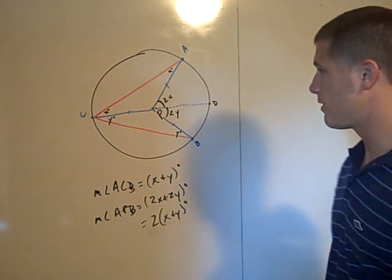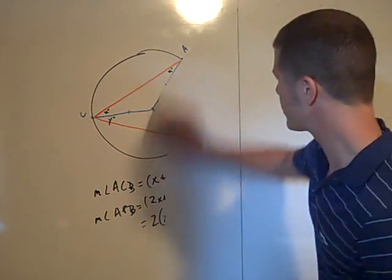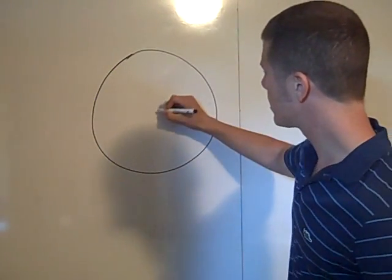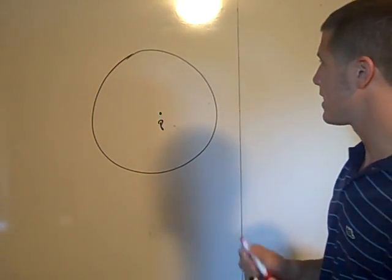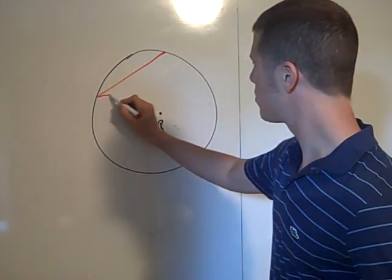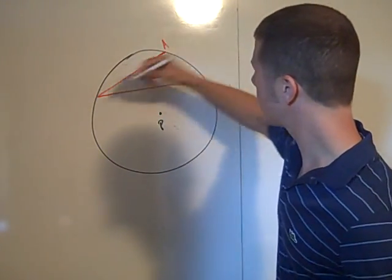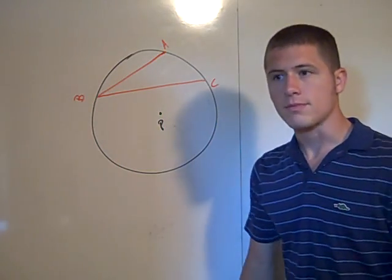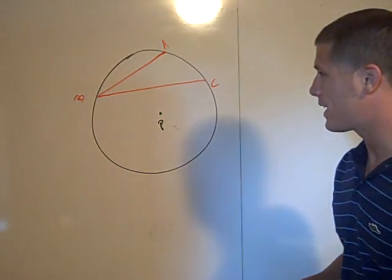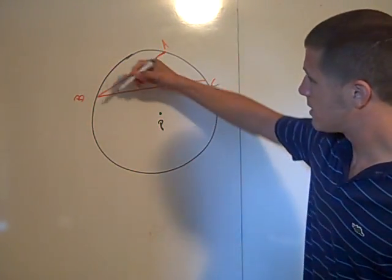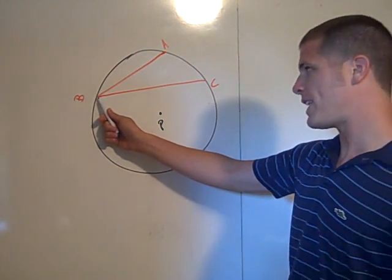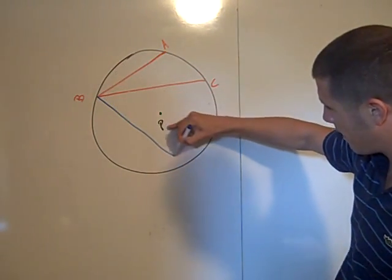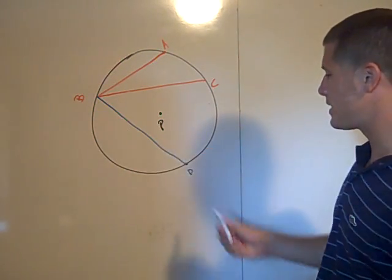That's probably the hardest case — when the center is in the interior of the inscribed angle. Now, what if the center is in the exterior? Let P be the center, and let the inscribed angle have vertex B with endpoints A and C. Again, it's all about drawing the right auxiliary line — a line from B through P, so that P is in the interior of the new angle. We draw segment BD.